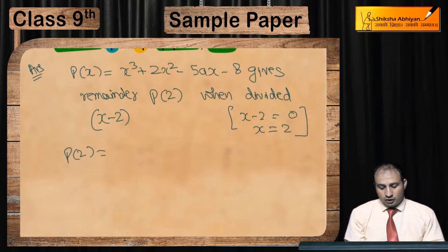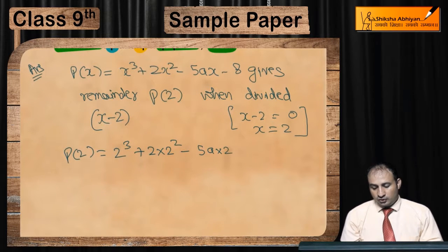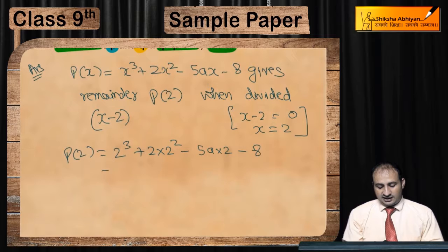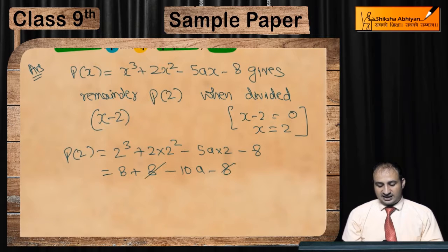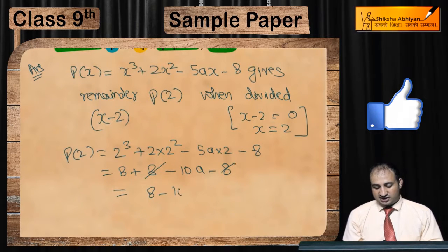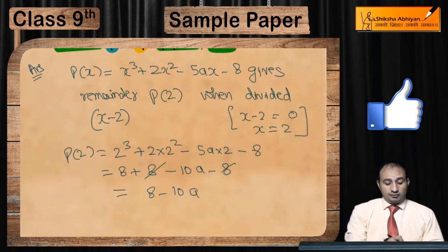So p(2) = 2³ + 2(2²) - 5a(2) - 8 = 8 + 8 - 10a - 8. The 8s cancel, leaving 8 - 10a.